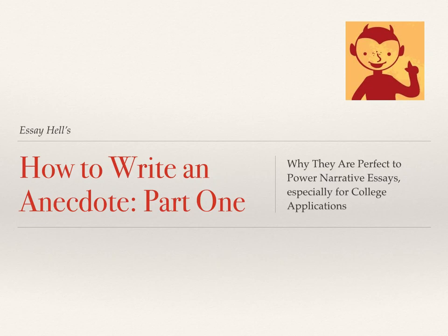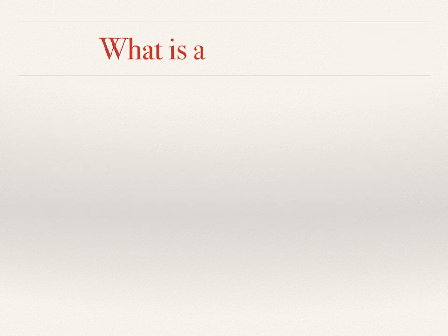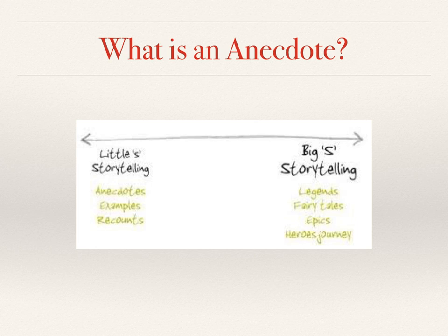How to write an anecdote, part one: why they are perfect to power narrative essays, especially for college applications. An anecdote is a funny word that means a mini story from real life. It usually is only a paragraph or two in length and covers something that took place over a few minutes.